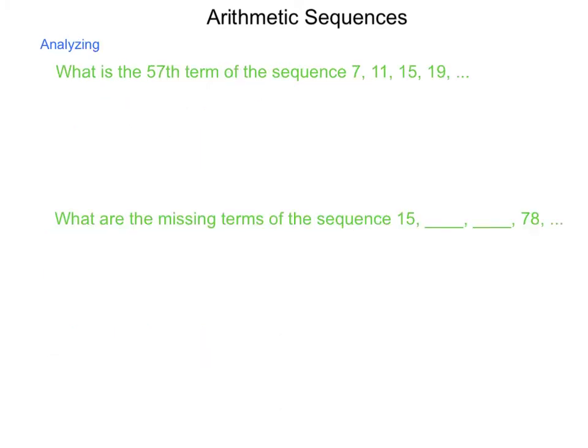Next, let's analyze some arithmetic sequences. What would be the 57th term of the sequence that begins 7, 11, 15, 19? Let's look first to see, is this arithmetic? Well to move from 7 to 11, we add 4. 11 to 15 is add 4, 15 to 19, we add 4. So we're going to use this to write an explicit formula.